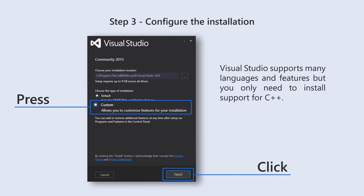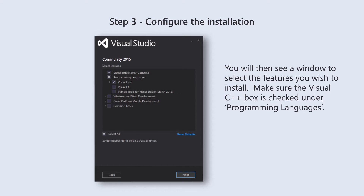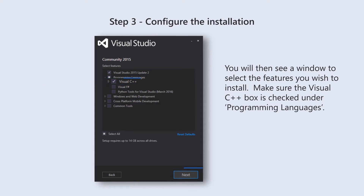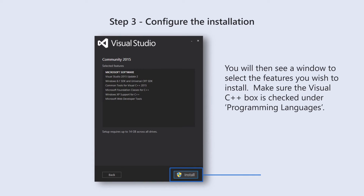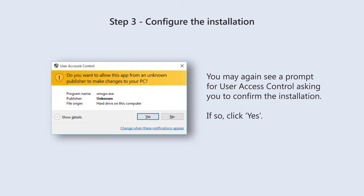Click Next. You will then see a window to select the features you wish to install. Make sure the Visual C++ box is checked under Programming Languages, Visual C++. Click Next, then click Install. You may see a prompt for User Access Control asking you to confirm the installation. If so, click Yes.